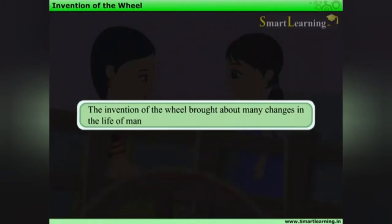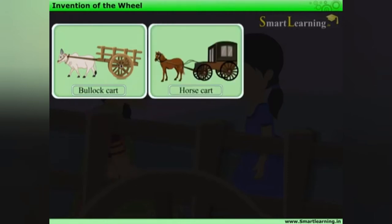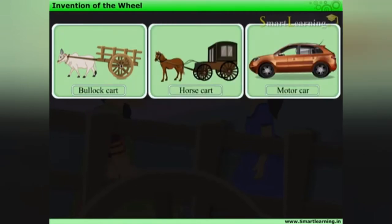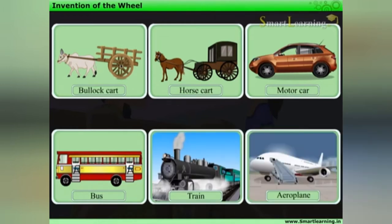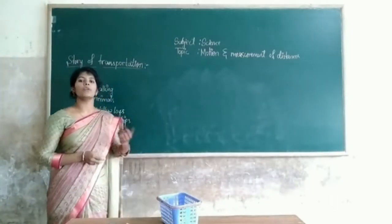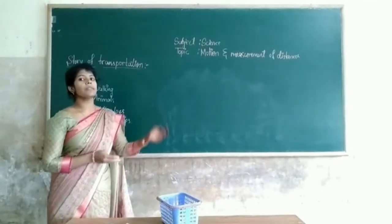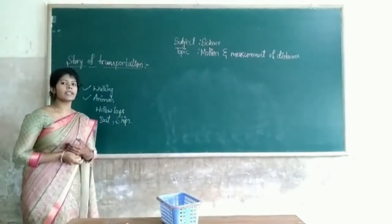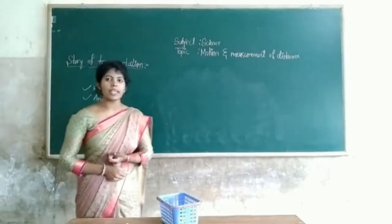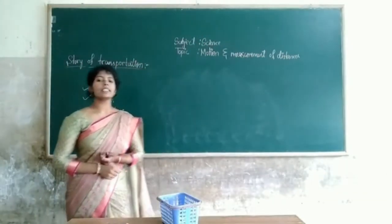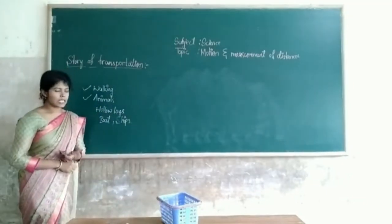The invention of the wheel brought about many changes in the life of man. Later on came bullock carts, horse carts, motor cars, buses, trains, and aeroplanes. From bullock carts, we started using the steam engine, and from the steam engine to now we are using modern vehicles.